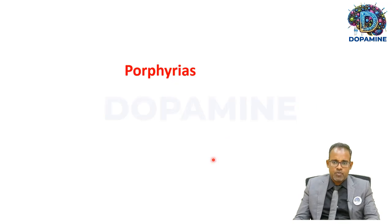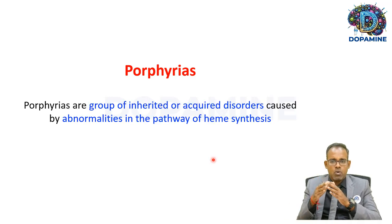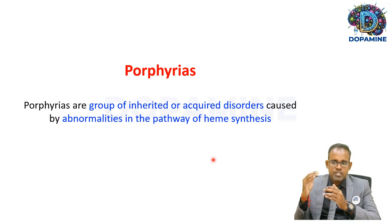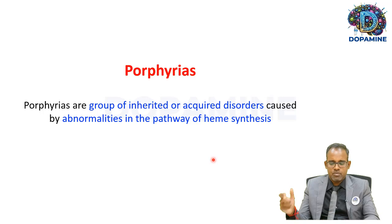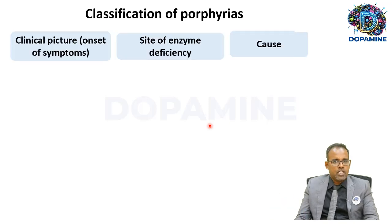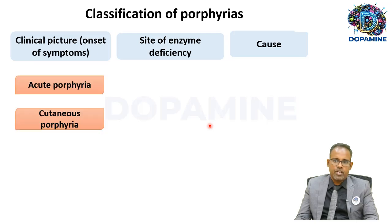Porphyrias are a group of inherited or acquired disorders caused by abnormalities in the pathways of heme synthesis. They can be classified in multiple ways: based on clinical picture as acute porphyria or cutaneous porphyria, based on site of enzyme deficiency as erythropoietic or hepatic porphyria, and based on cause as hereditary or acquired.